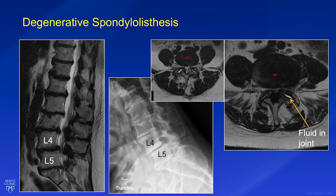Since degeneration of the spine allows the slippage to occur, we call this type of slippage degenerative spondylolisthesis. In summary, spondylolisthesis is a slippage of one spinal vertebra on top of another. The two most common types are lytic spondylolisthesis and degenerative spondylolisthesis, and these slips tend to occur at the lower end of the lumbar spine. Lytic types occur earlier in life, while degenerative types take decades to develop.